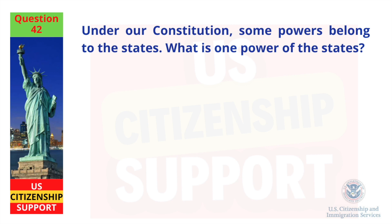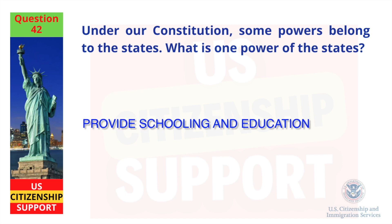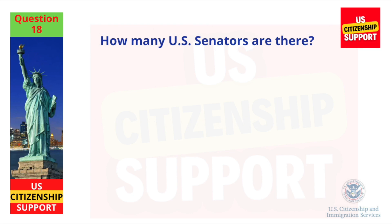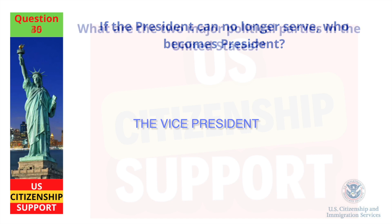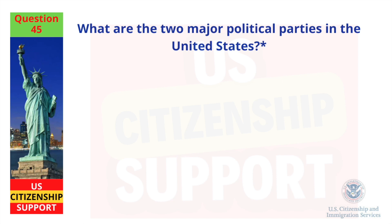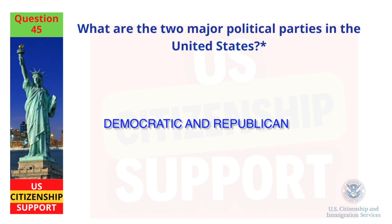Under our Constitution, some powers belong to the states. What is one power of the states? Provide schooling and education. How many US senators are there? 100. If the president can no longer serve, who becomes president? The vice president. What are the two major political parties in the United States? Democratic and Republican.